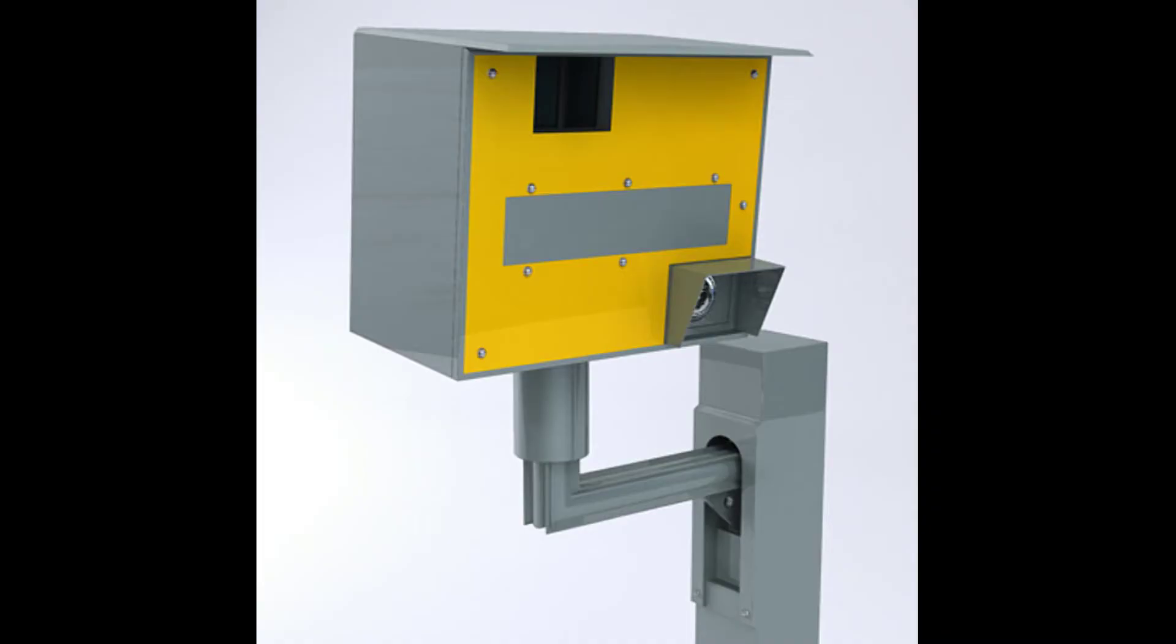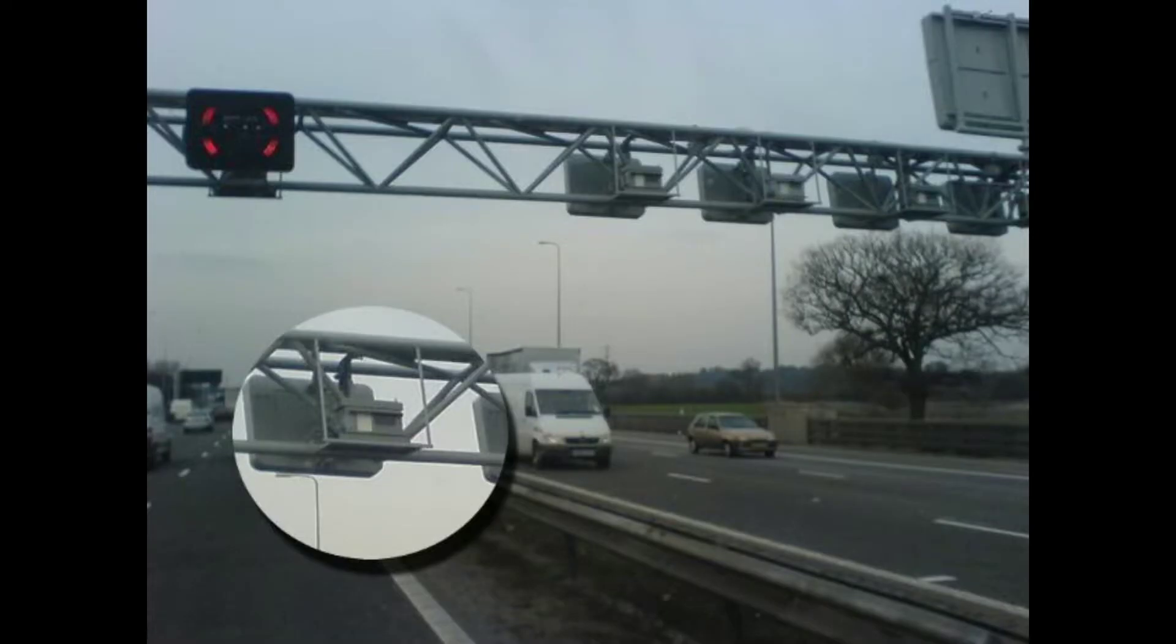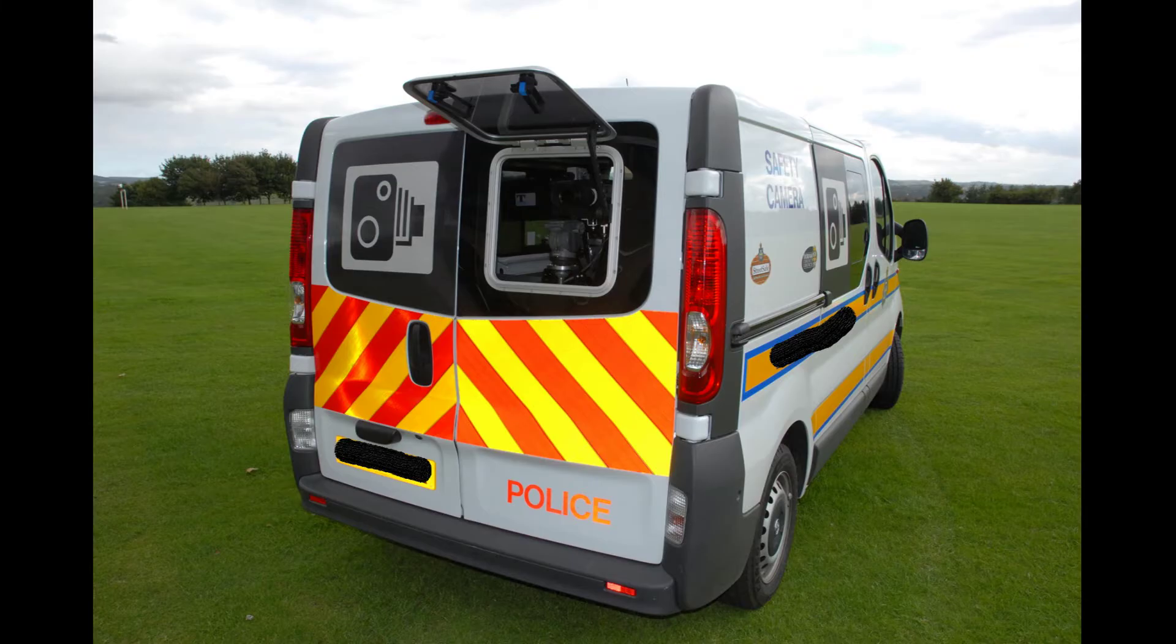So what we're talking about today is the GATSO camera, the GATSO speed camera. And it's highlighted here by the yellow box that you see on the side of the road. These were first introduced in the early 1990s, and now you'll see them on motorway gantries and in the back of police vans, mainly. And they use a radar system.